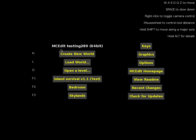So I'll be using MCEdit testing 289, which I believe is the last version before it went to open source. I'm using it because although it's not compatible with Anvil formats directly, the open source versions aren't quite stable enough yet.